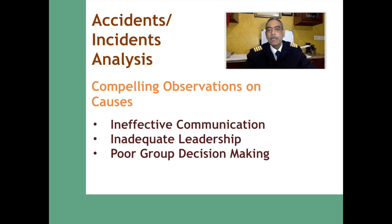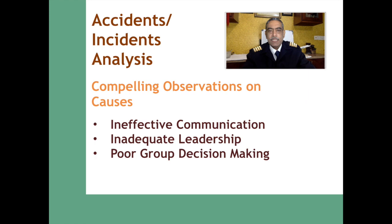Poor group decision-making — because of ineffective communication, the crew was unable to take decisive action to tackle an emergency situation. In several situations, the crew could have sought help from air traffic control, or they unnecessarily hurried through a situation leading to an accident, or they concentrated too much on one particular phase or cause, totally neglecting the actual flying of the aircraft, which led to an accident. This is what led to the development of Crew Resource Management.